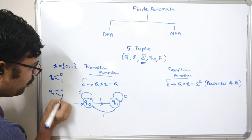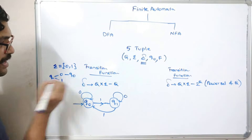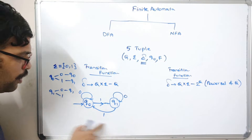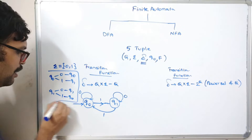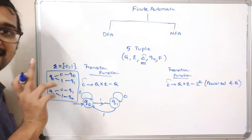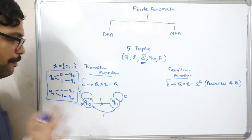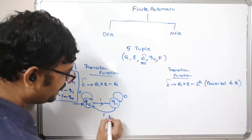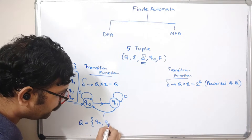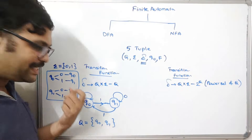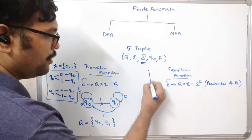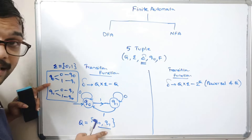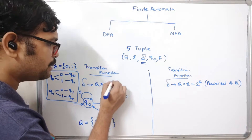In this DFA example: Q-naught on 0 remains in the same state Q-naught; Q-naught on 1 moves to Q1; Q1 on 0 remains in Q1; and Q1 on 1 goes to Q-naught. You can observe clearly that for every transition of a state with an input symbol there is only one resulting state — only one path. That's why we say Q cross sigma equals Q: the result is always one state from the set Q, which is {Q-naught, Q1}.